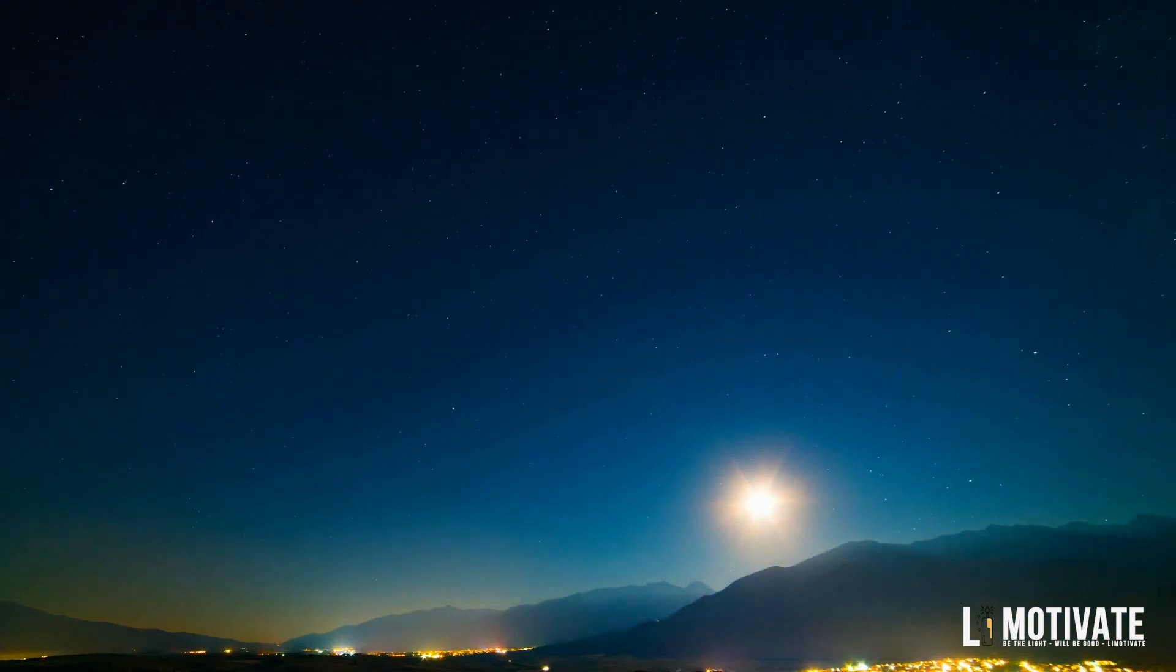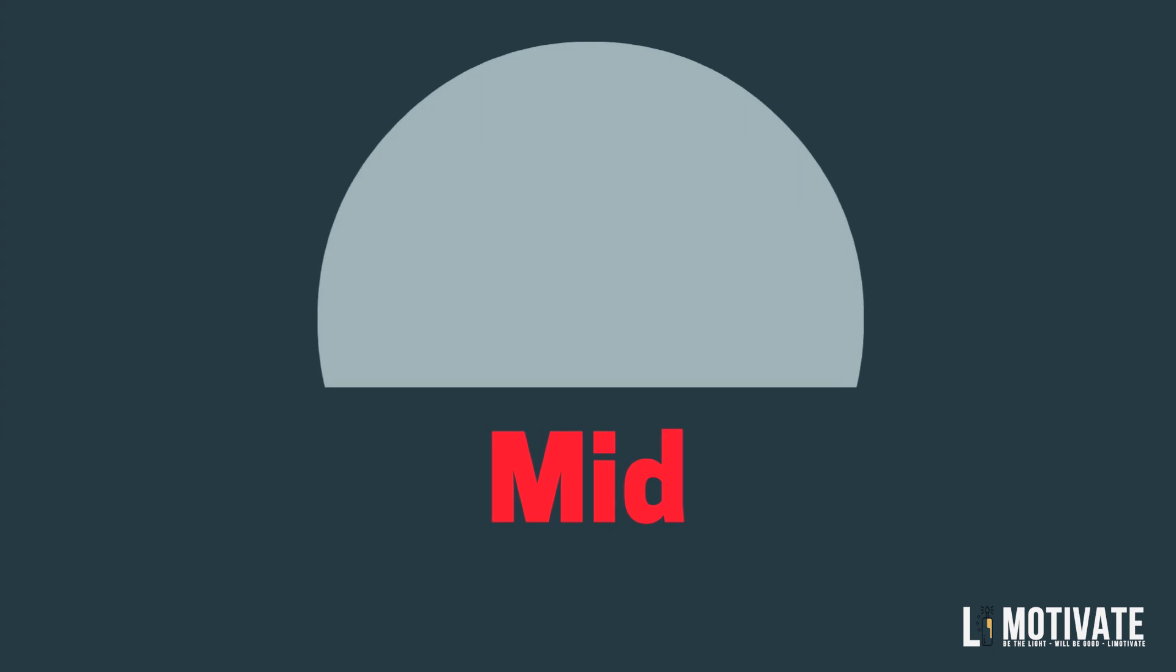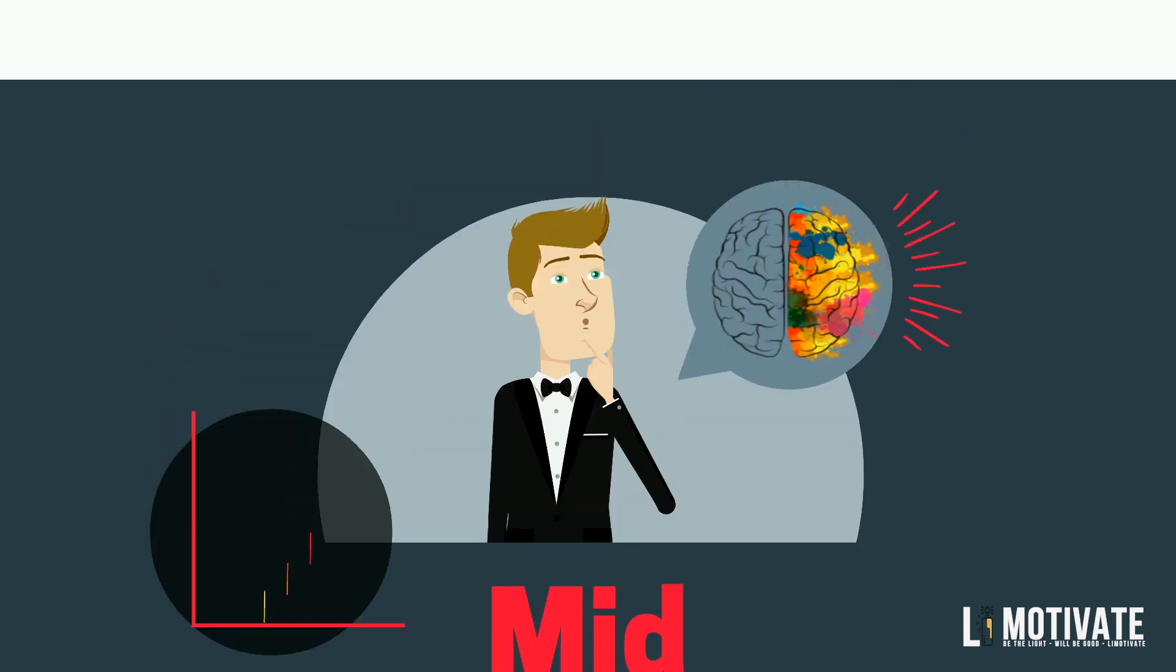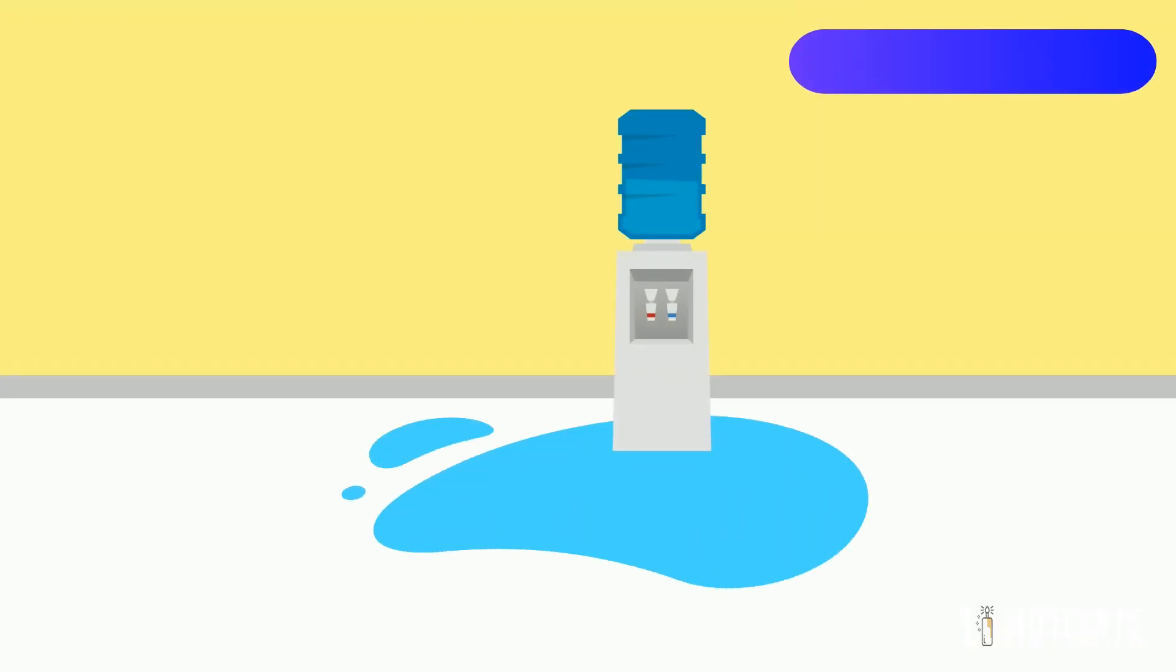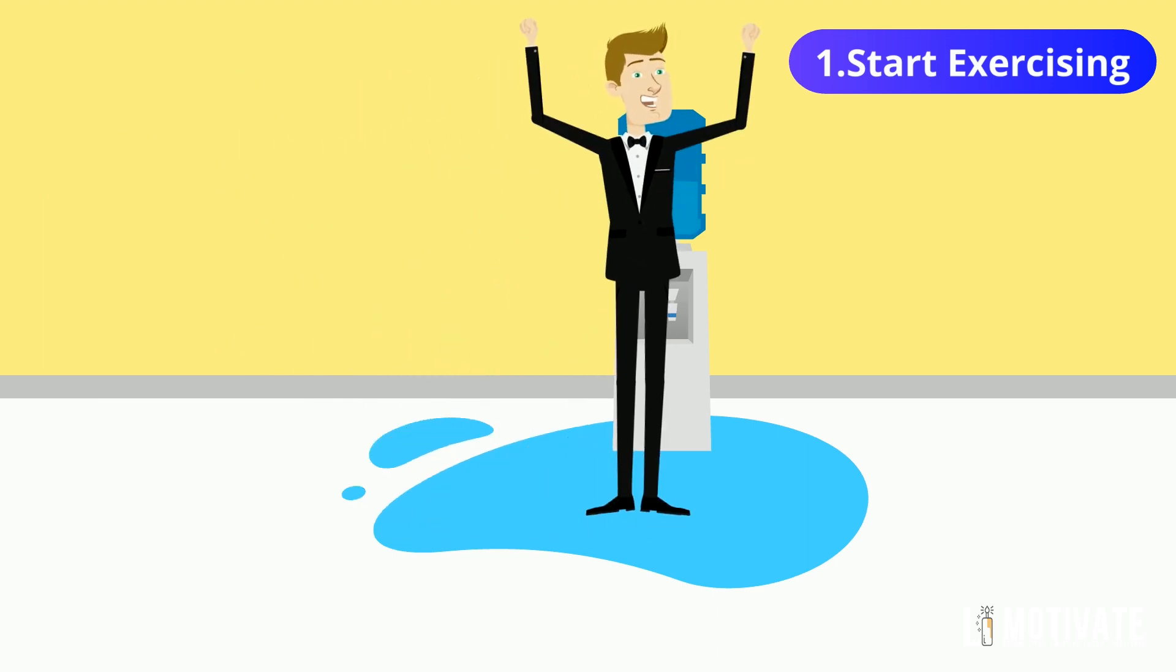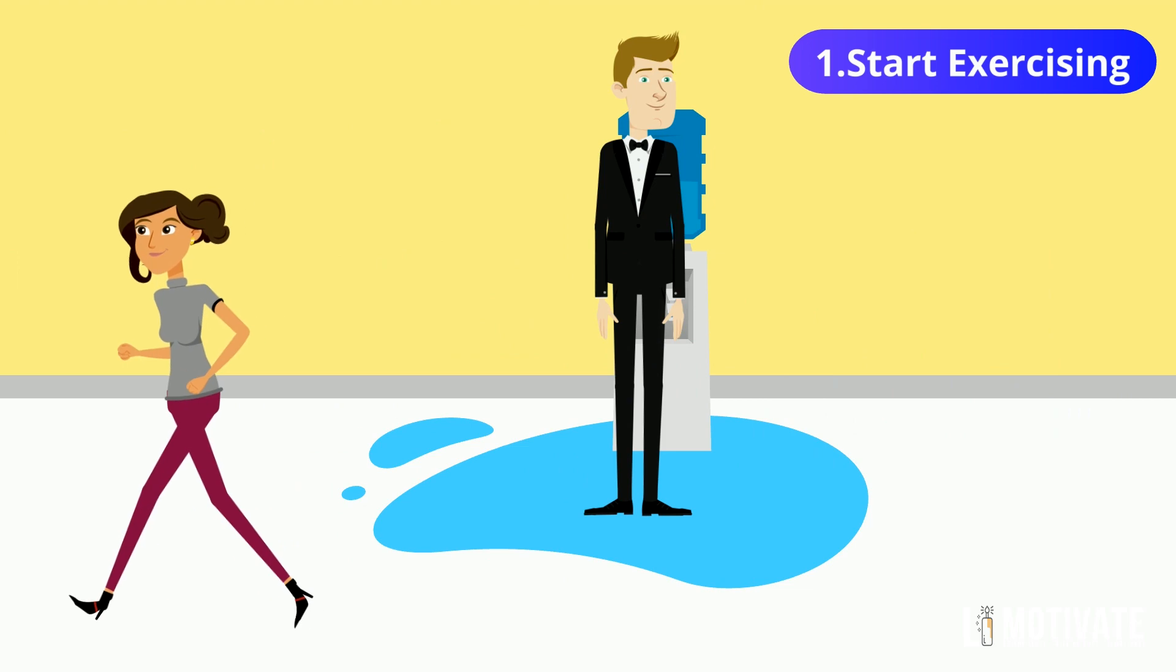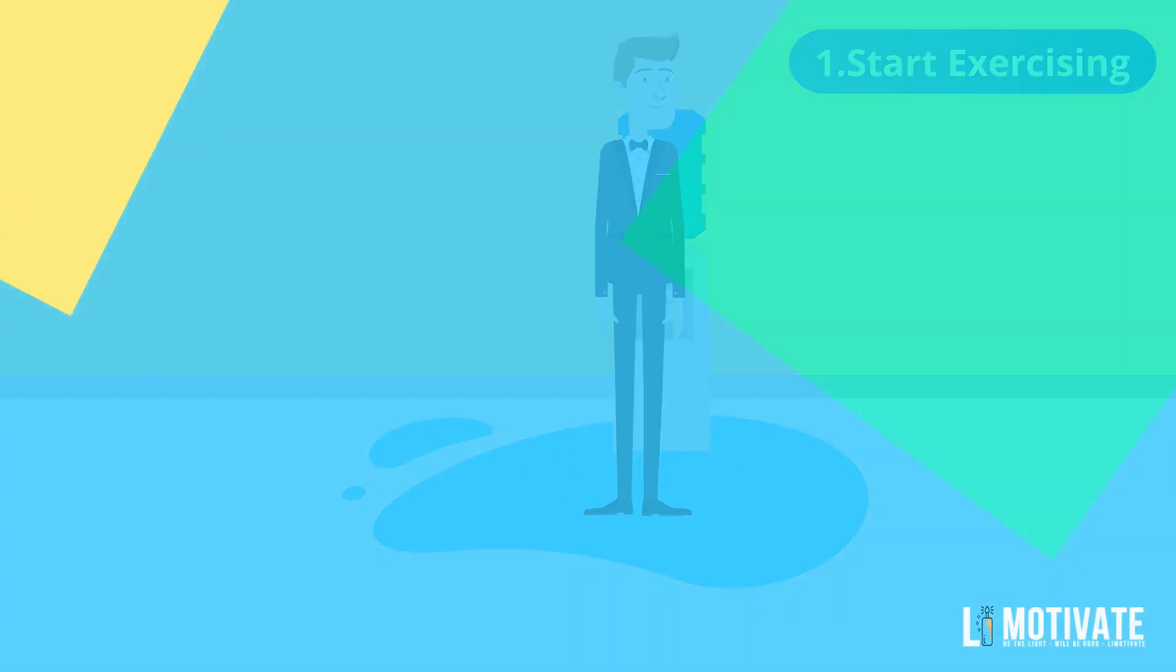Get a midday nap and that'll dramatically improve and restore your brain power. Number one: Start exercising. Regular exercise improves the blood flow to the brain and encourages your brain to work at optimum capacity.